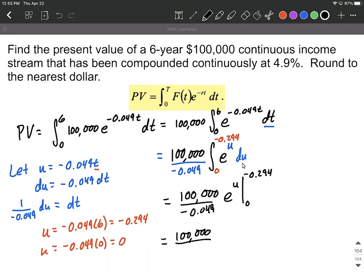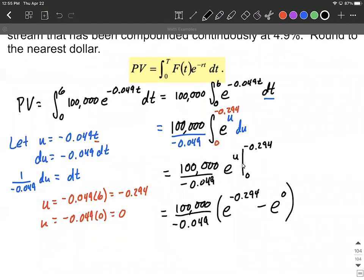So for this, I think it's going to be easiest if we leave this constant out in front and go e raised to the upper bound minus e raised to the lower bound. Now that e to the 0 power is going to be equal to 1. So putting that in your calculator may be a little bit easier if you just use 1 there instead of e to the 0.